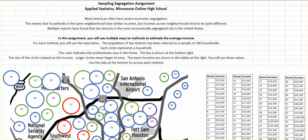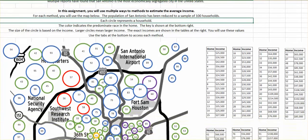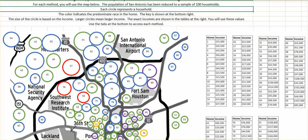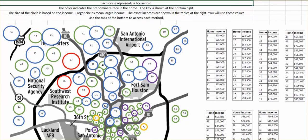So imagine we're looking at the average income of San Antonio. First off, we are starting with a smaller sample. Imagine that the population of San Antonio has been reduced down to 100 households, which represent the overall population. On this map, the colors of the circle indicates the race, the predominant race of that household.